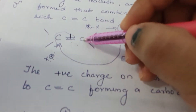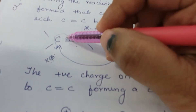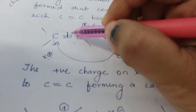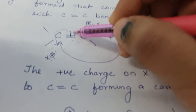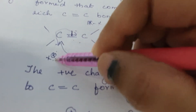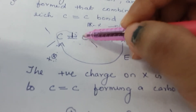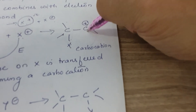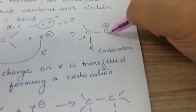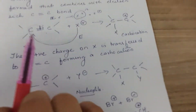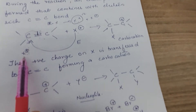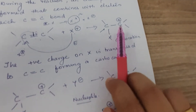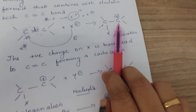In the double bond, two electrons are shared through pi bond. When the electrophile X attracts those pi electrons, the carbon becomes deficient in electrons and a positive charge develops on the carbon. So a carbocation is produced. X attacks and attracts the pi bond electrons, and the carbon attains a positive charge.